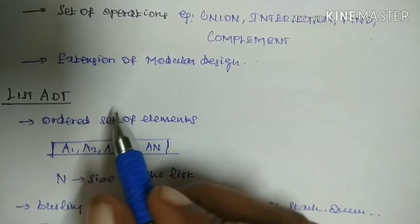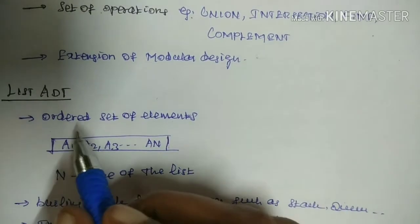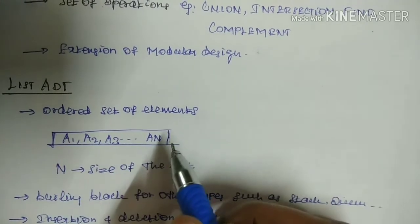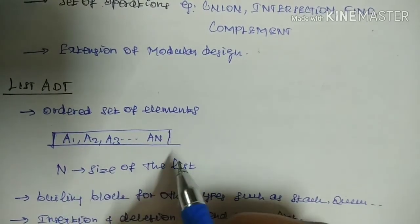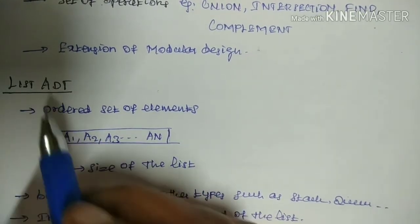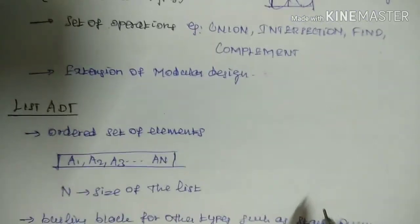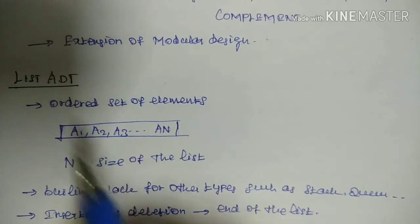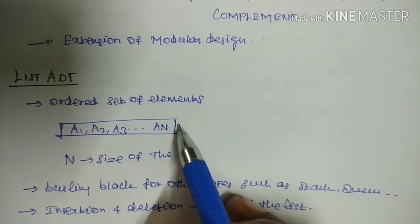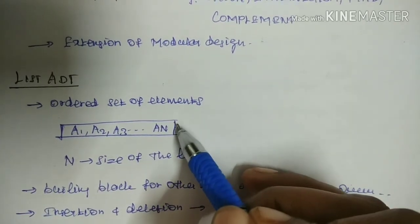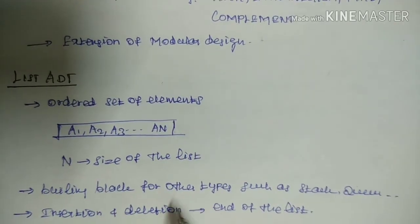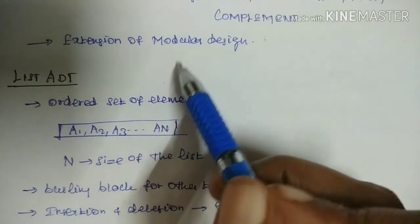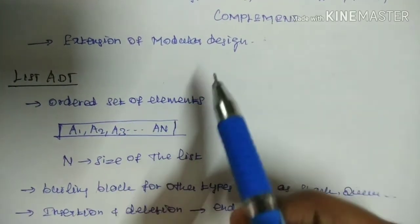Next, List ADT. It is an ordered set of elements stored in the form A1, A2, A3, ..., AN. A1 is the first element, AN is the last element, and N is the size of the list. The list is a building block for other types such as Stack and Queue. Insertion and deletion are performed at the end of the list. The list can be implemented in two ways: array implementation and linked list implementation.